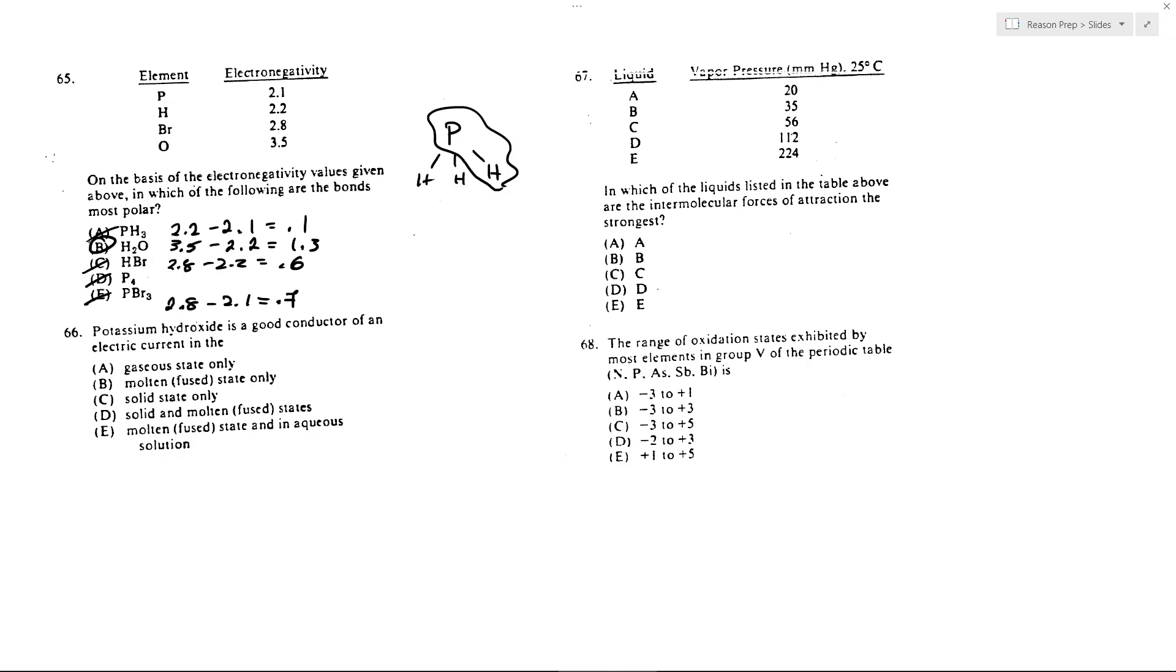66, when is potassium hydroxide a good conductor of electric current. So the main thing you want to know is that this is essentially an ionic compound because you've got your K plus and your OH minus. And so in its solid state as a salt, it's not going to conduct electricity, but if you melt it, if you make it molten, if you make it liquid, it will conduct electricity because essentially those ions are no longer tethered in a crystal structure and they can move around, then the movement of ions equals electricity movement, basically, electricity conducting.